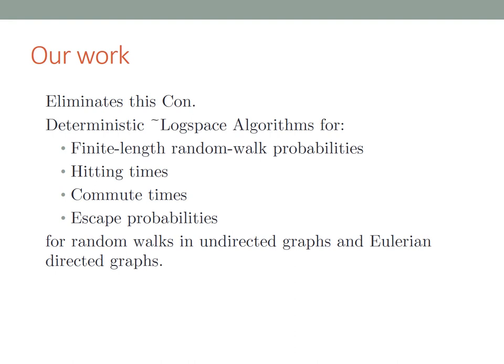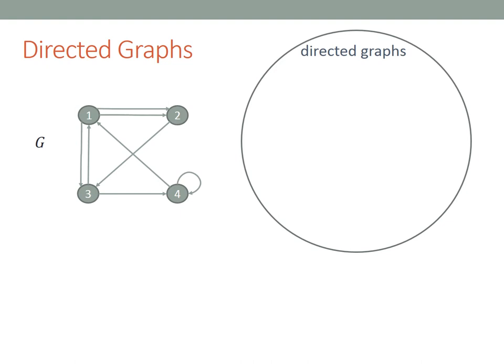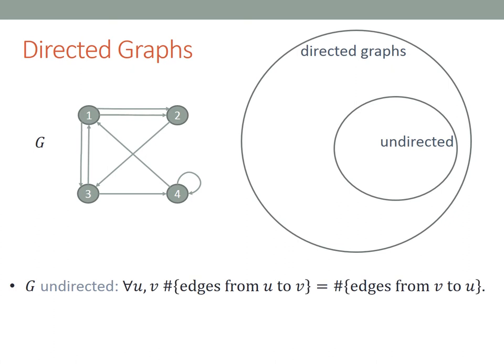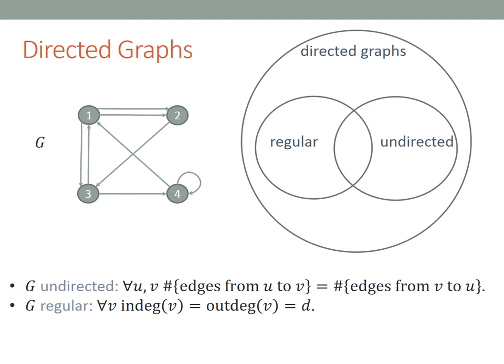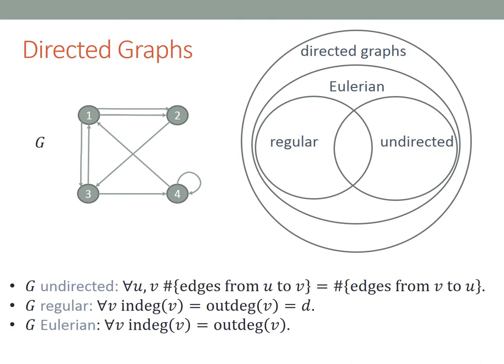We can do this for random walks in undirected graphs and also Eulerian directed graphs, but not arbitrary directed graphs. As a reminder: directed graphs include undirected graphs as a special case; regular graphs are directed graphs where in-degree equals out-degree and both equal a fixed d; and Eulerian graphs generalize both regular and undirected graphs, requiring only that in-degree equals out-degree at every vertex, without requiring the degrees to be the same across vertices.